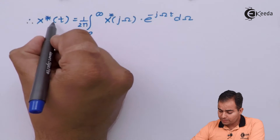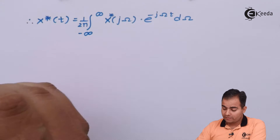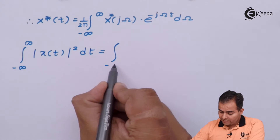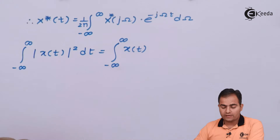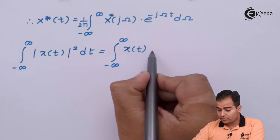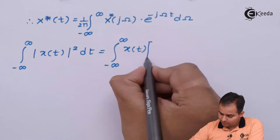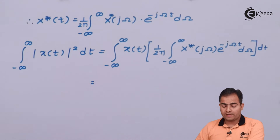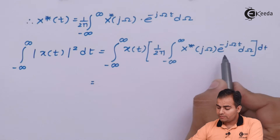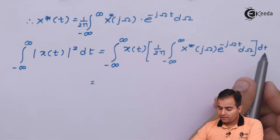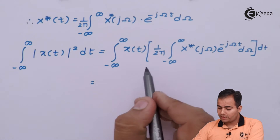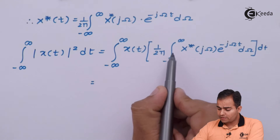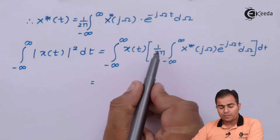Now I am going to substitute this whole value into equation number 1. So equation number 1 becomes the integration from minus infinity to infinity of x(t) multiplied by its complex conjugate. I will integrate x(t) with e to the power minus jωt dt, keeping the rest outside. We use x(t) e to the power minus jωt dt in one integration, and in another integration we keep x*(jω) dω. And 1 upon 2π, being constant, we write first.